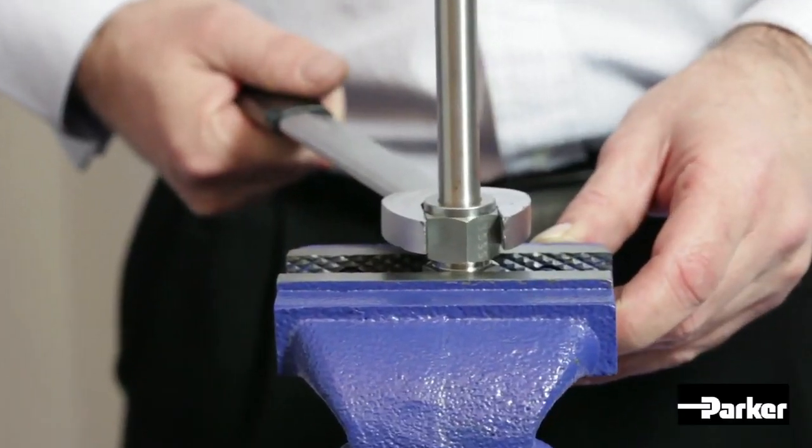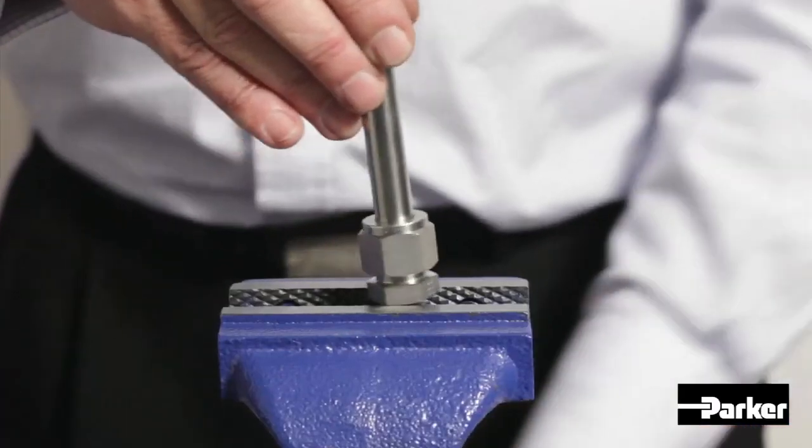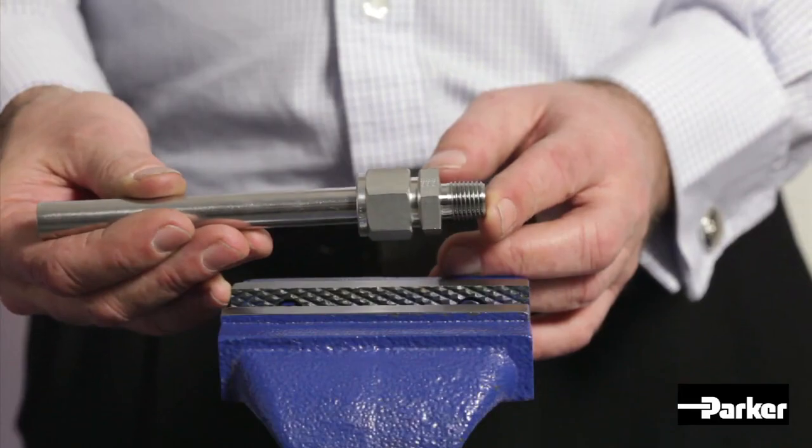Once you have reached the original ferrule seat position, advance the nut slightly further to regain a positive seal. Your assembly is now complete.